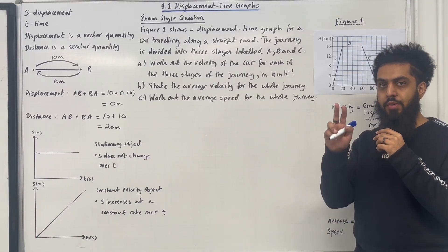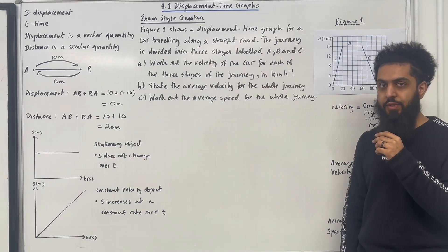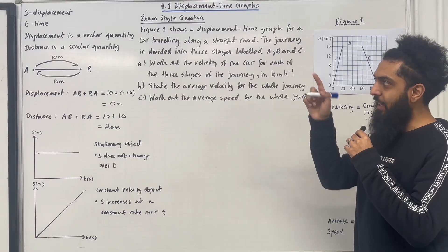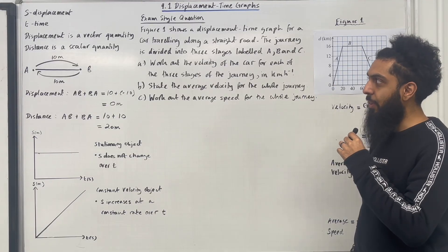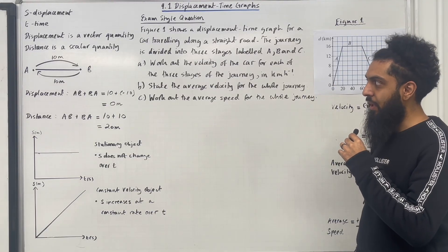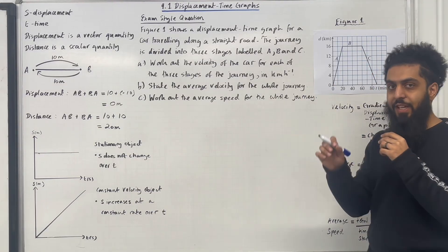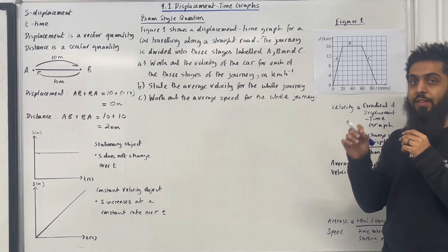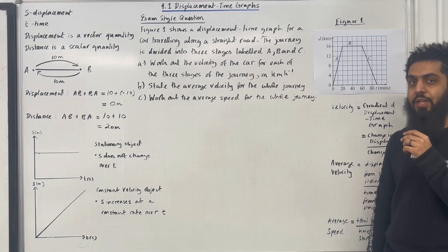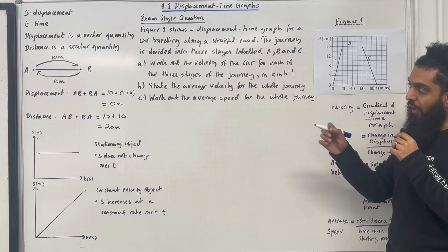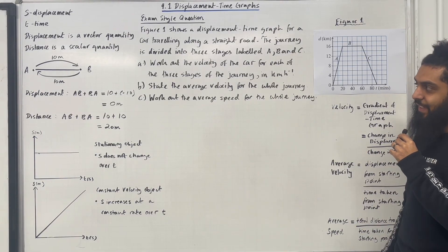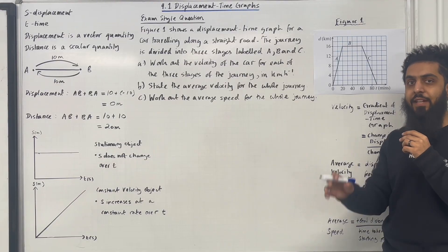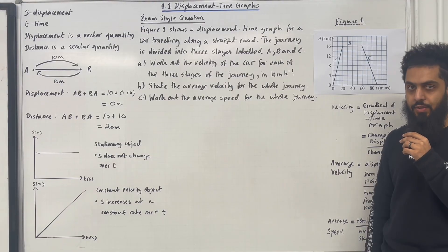Starting off with two important notations: S represents displacement and T represents time. Displacement is a vector quantity — it has a magnitude and a direction. Whereas distance is a scalar quantity; it only has a magnitude.